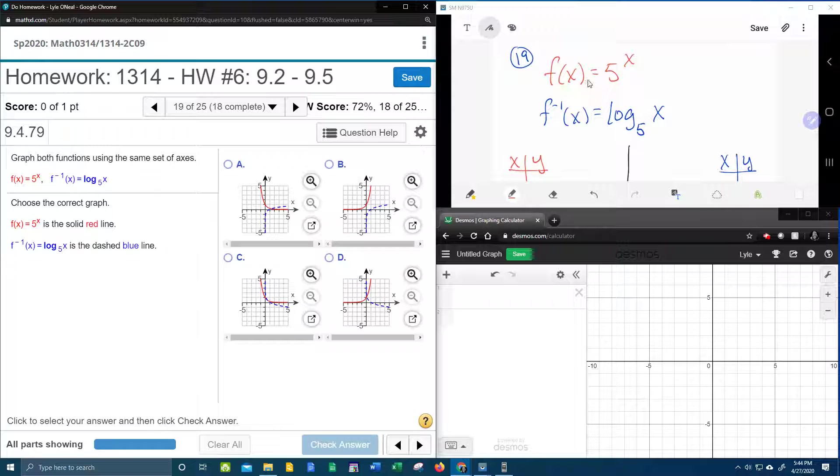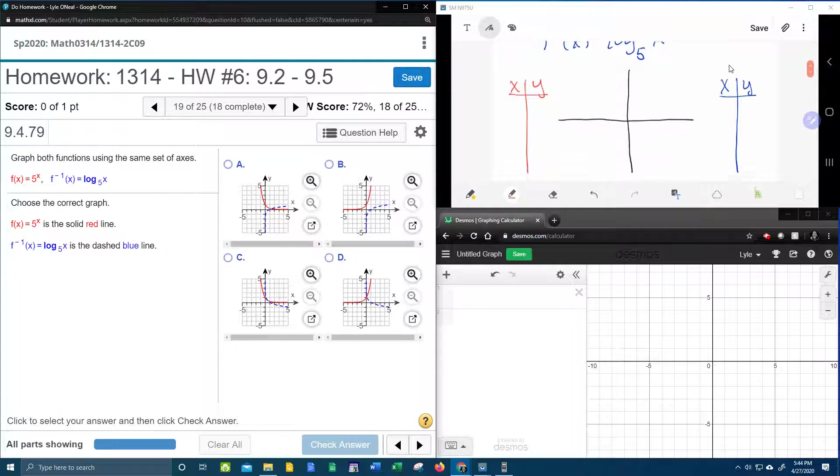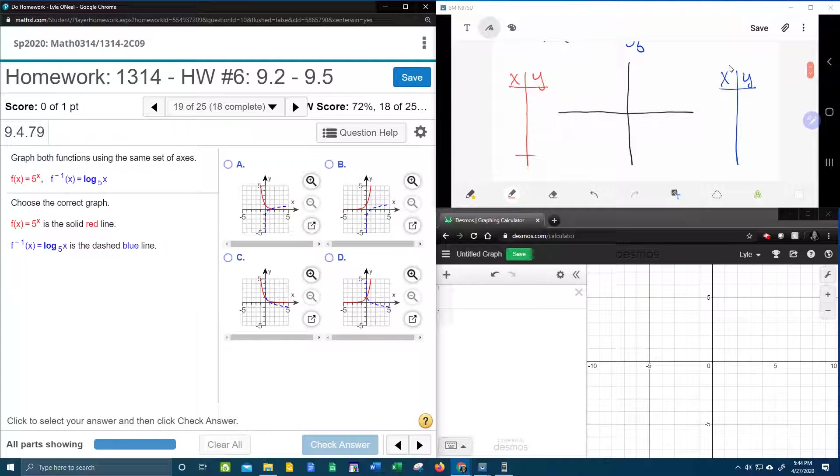So in red I've got my exponential function, and to graph that we're going to pick 3 x's, and I'm not going to get too crazy, I'm just going to go negative 1,